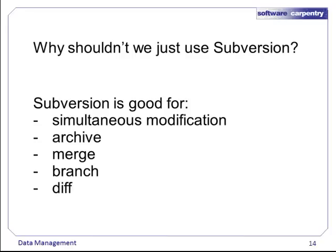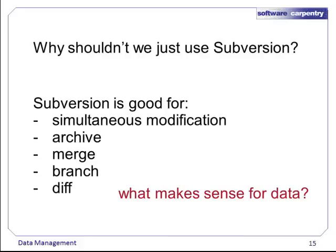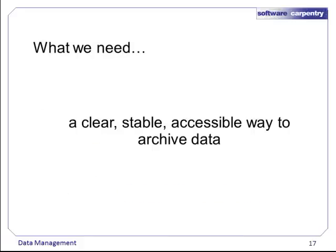Why shouldn't we just use Subversion to manage our data files? Subversion is good for keeping track of simultaneous modification, archiving, merging, branching, and diffing. What makes sense for data? Well, archiving. We really just want a clear, stable way of archiving data so that we can find and access it at a point far in the future, but that doesn't tie different versions together in ways that don't make sense for data.